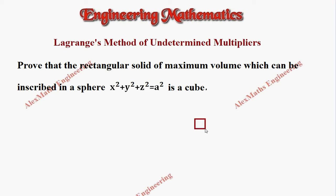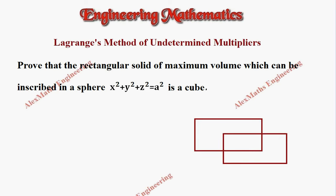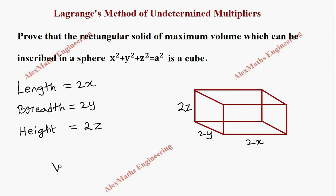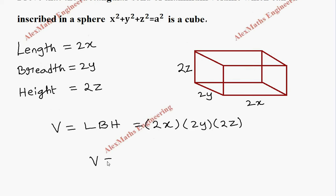We have a rectangular solid which is nothing but a cuboid. So we have to take the length, breadth and height. Let's take the length as 2x, breadth as 2y, height as 2z. The volume of a cuboid is V = length × breadth × height, so here it is 2x × 2y × 2z, giving volume V = 8xyz.